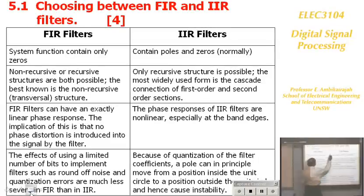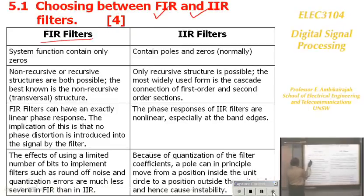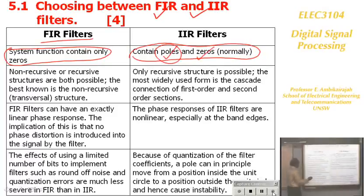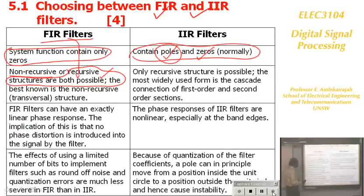Now, choosing between FIR and IIR filter. FIR filter only contains zeros — by having only zeros, filters are always stable. IIR filter will always have poles and zeros, but it must have poles. FIR filter is nonrecursive, meaning there's no feedback. However, under special conditions of FIR filter coefficient values, we can actually implement an FIR filter as an IIR structure. FIR filter can have exactly linear phase, meaning no phase distortion in the signal when it passes through the filter.